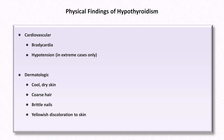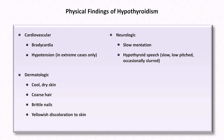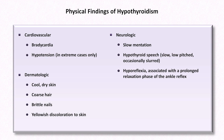Hypothyroid patients frequently have neurologic findings, specifically slow mentation, hypothyroid speech — characterized by slow, low-pitched, and occasionally slurred speech, partly a consequence of mucinous material deposition within the vocal cords — and hyporeflexia, associated with a prolonged relaxation phase of the ankle reflex. Two miscellaneous findings include hypothermia and non-pitting generalized edema, thought to be due to the accumulation of mucopolysaccharides in the subcutaneous tissue. This form of edema is occasionally called myxedema — similar to, but not identical to, pretibial myxedema, which is actually more classically described in Graves disease. Adding to the confusion, the term myxedema is occasionally used as a historical synonym for hypothyroidism itself.